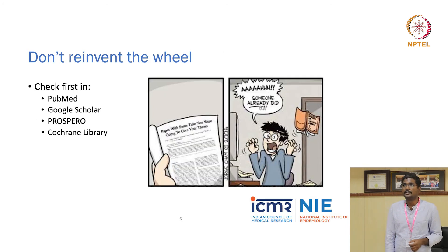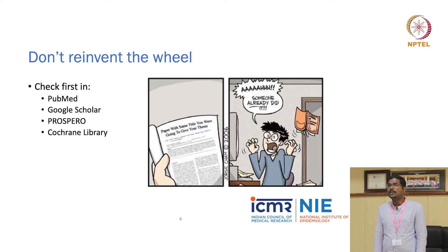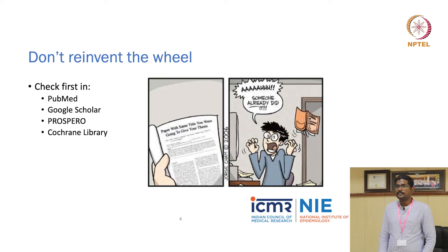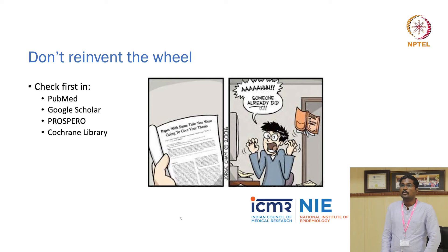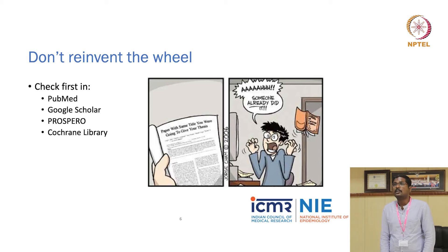Don't reinvent the wheel. If you have a review question in mind, go to PubMed and type those keywords to check for existing systematic reviews. Also search Google Scholar, PROSPERO — a register where all systematic reviews are registered prospectively — and the Cochrane Library. These four sources will help you confirm that your intended review has not already been done. This step is very important but least emphasized.